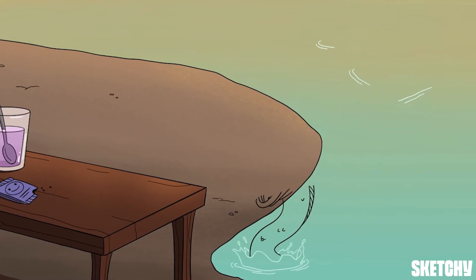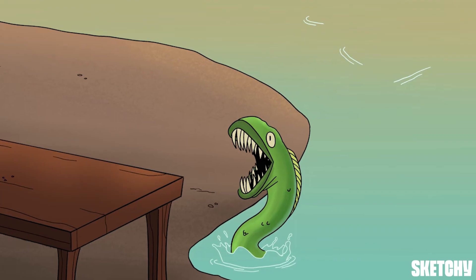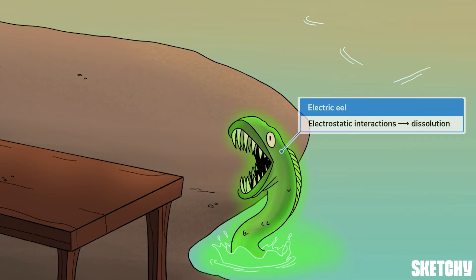In order to dissolve — which is also called solvation or dissolution — the different molecules of solute and the different molecules of solvent are pulled apart, so new intermolecular forces between the solute and solvent can form. This charged-up electric eel should remind you that this process happens due to electrostatic interactions, which are attractions or repulsions based on charge.